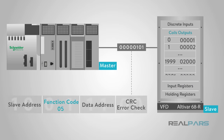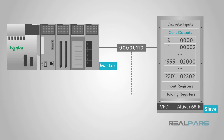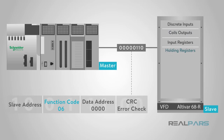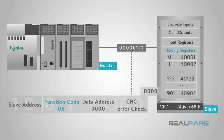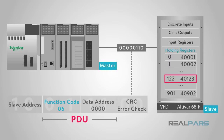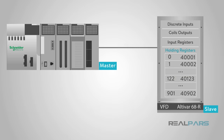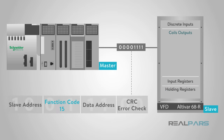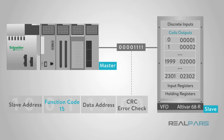Function code 05, WriteSingleCoilCode, is used to write a single output to either on or off in a remote slave device. Function code 06, WriteSingleRegisterCode, is used to write a single holding register in a remote slave device; the request PDU specifies the address of the slave memory register to be written to. Function code 15, WriteMultipleCoilsCode, is used to force each coil in a sequence of coils to either on or off in a remote slave device.